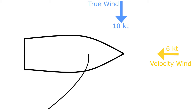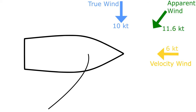If you were to go for a run indoors, you'd feel the wind on your face even though the air inside isn't moving. The same thing happens to your boat. The true wind and velocity wind combine to give us the apparent wind.